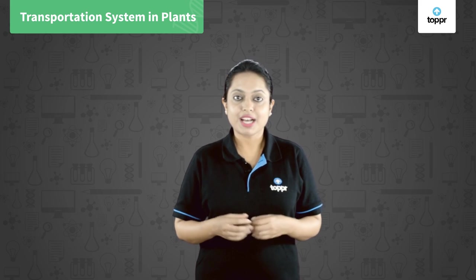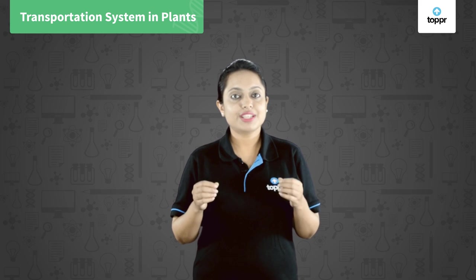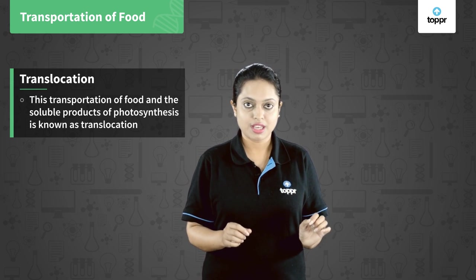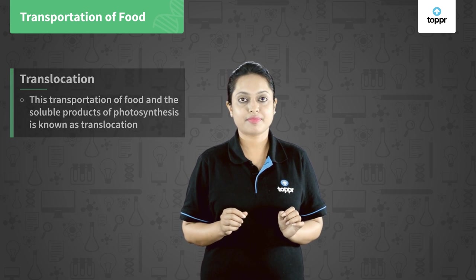Plants also need energy, which they derive from the food they synthesize during the process of photosynthesis. There should be some method by which they can transport this food from the leaves to the other parts of the plant. This transportation of food and the soluble products of photosynthesis is known as translocation. Food is stored in plants in the form of sucrose, and the tissue responsible for the transport of food is phloem tissue.